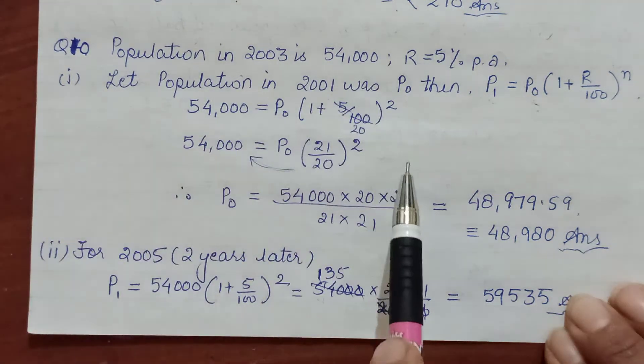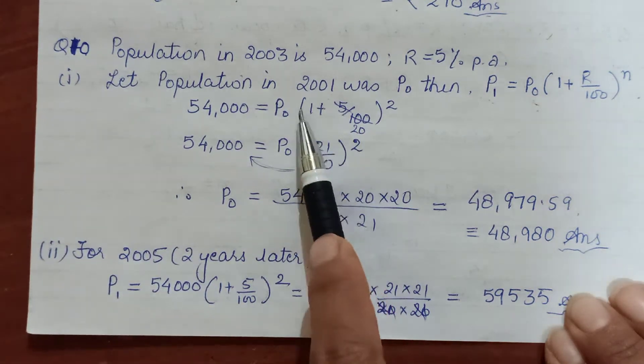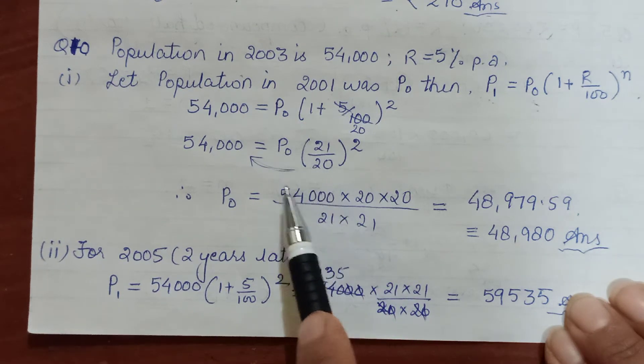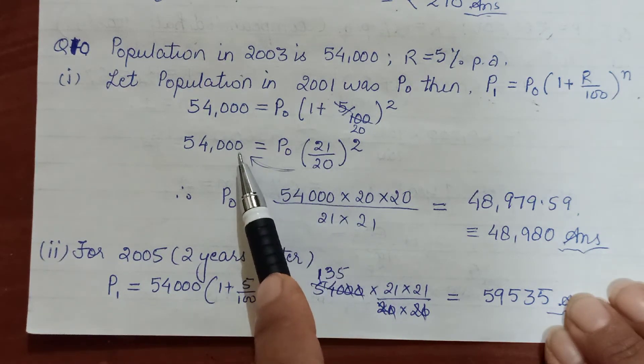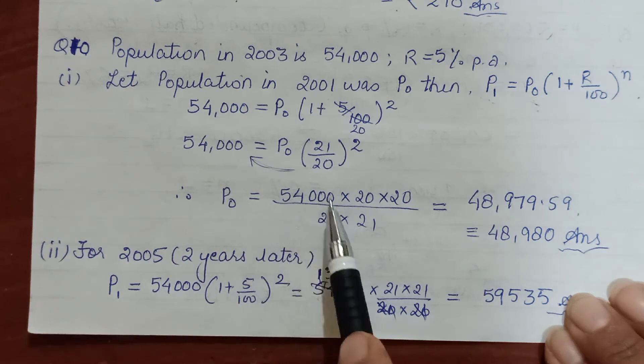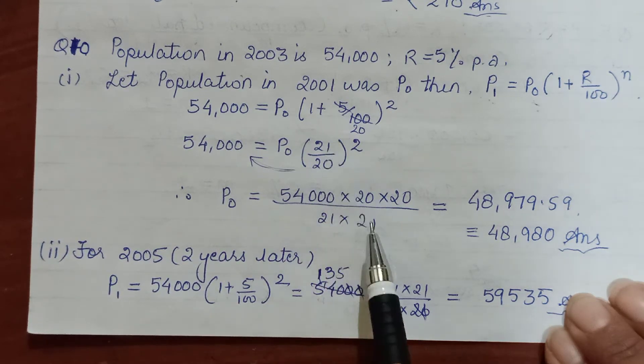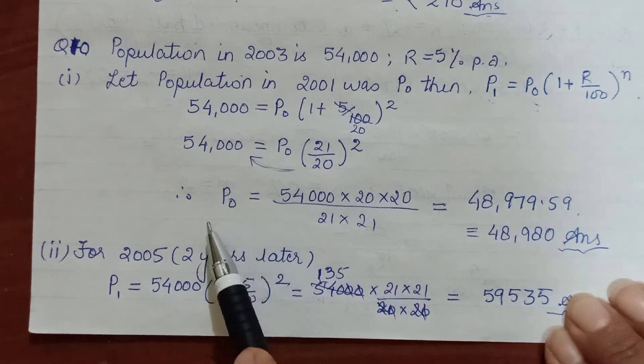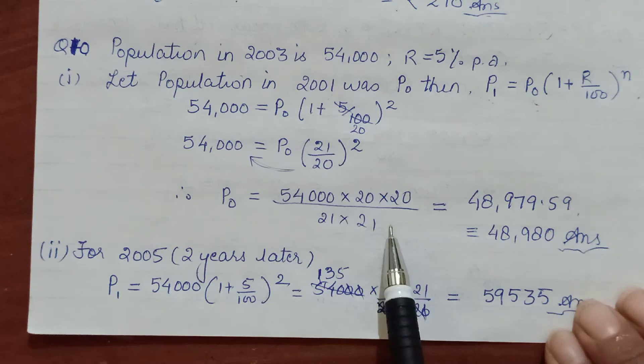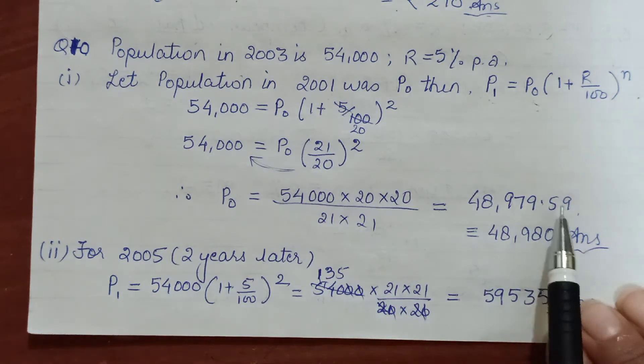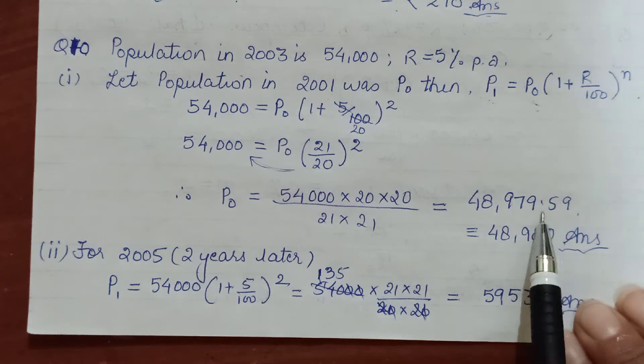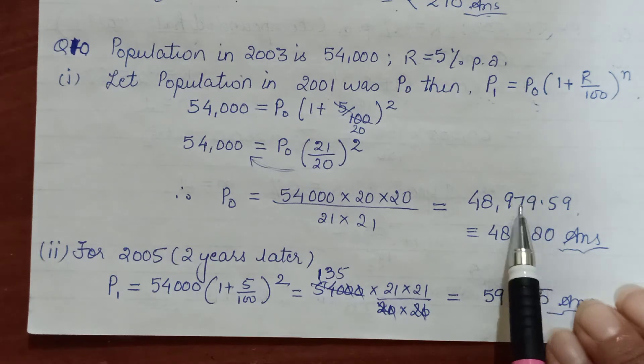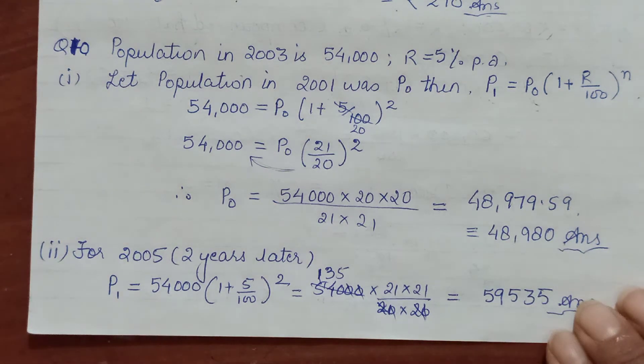20 plus 1 is 21. To find this, you will have to change the subject, taking this number to the other side. P₀ = 54,000 × 20 × 20 / (21 × 21). Work out the calculation yourself. You're getting an approximate value. Population we don't give in decimals, so nearest to 80 around—5, 9, 9 rounded up to 6, 6 rounded up makes it 80. The population would have been in 2001 as 48,980.